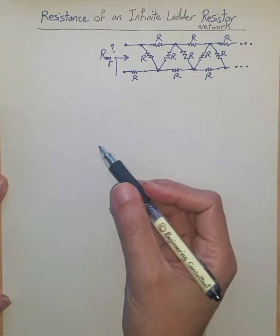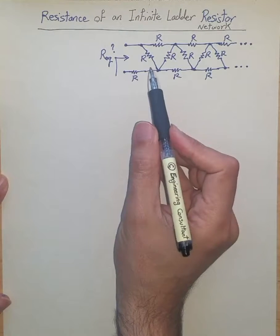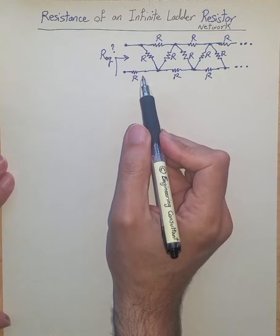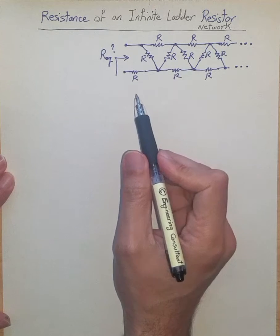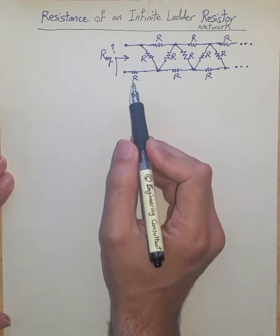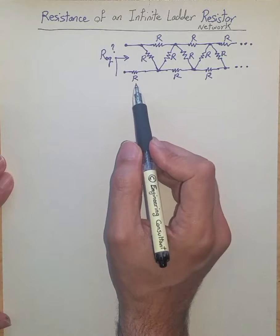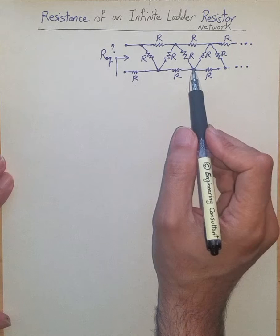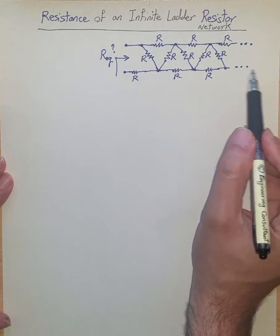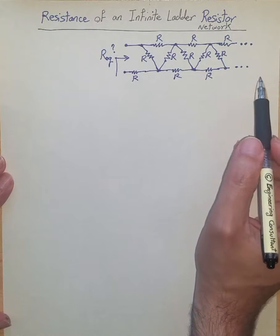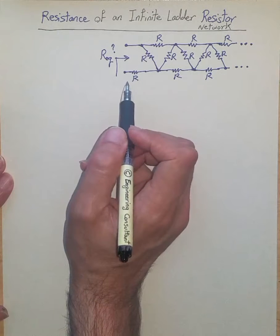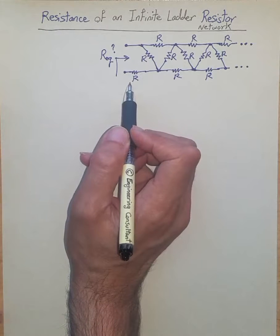How to compute the equivalent resistance of an infinite ladder resistor network as shown here. We have a passive resistive network in the format of an infinite ladder. Starting from here, we have resistor R, and that same value is used for all resistors in this infinite ladder network, which continues forever. We want to compute the equivalent resistance, assuming R is a finite resistive value.